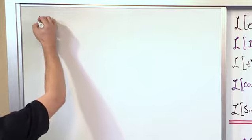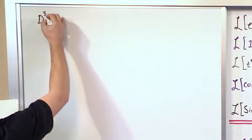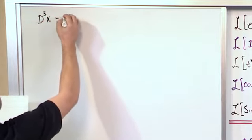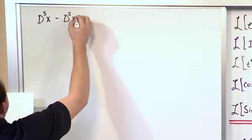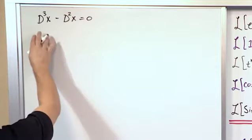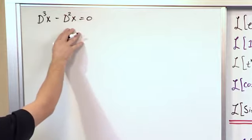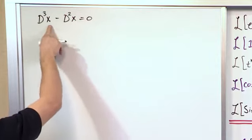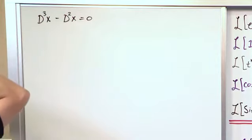So let's say we have the problem D³x - D²x = 0. So that's a typical differential equation in the operator notation. So it's the third derivative of x of t minus the second derivative of x of t is equal to zero.